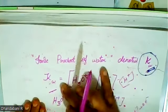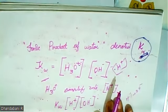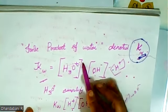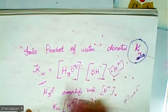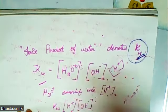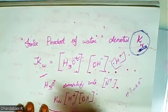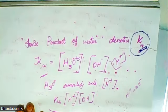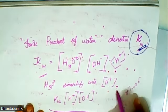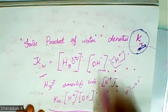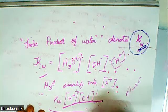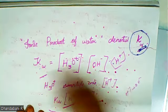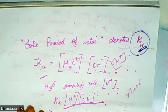How do we denote the ionic product of water? The ionic product of water is denoted as KW. KW is equal to [H3O+][OH−]. H3O+ is simplified to H+, so KW is equal to [H+][OH−]. These are the ions: H+ and OH−. Ionic product of water means nothing but H+ and OH−.